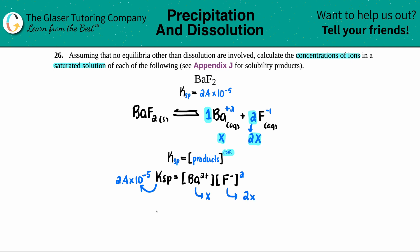Now let's do the math. 2.4 times 10 to the negative fifth equals X times 2X squared. 2X squared, you have 2X times 2X. 2 times 2 is 4. X times X is X squared. So I can just erase all of this and say that this is the same as 4X squared.